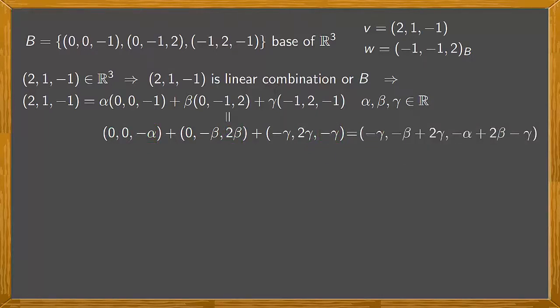Look at the first and last elements of this chain of equalities and equate component to component. We get that -γ = 2, -β + 2γ = 1, and -α + 2β - γ = -1.